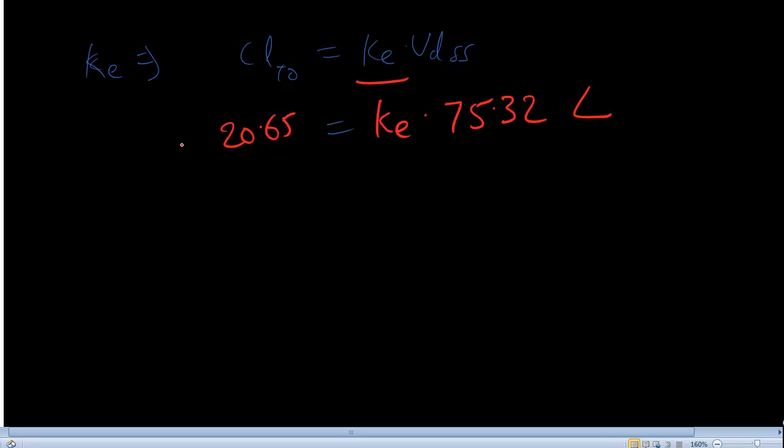So the final parameter that we need to calculate that is KE. Clearance total is equal to KE times VDSS. So we have the value of KE. Sorry, we are finding the value of KE. So we know the value of clearance total that is 20.65. In KE, we have to find out that VDSS is 75.32. This is in liters and this is in liters per hour. Liters cancel. And KE is equal to 0.274 hour inverse. That is it.